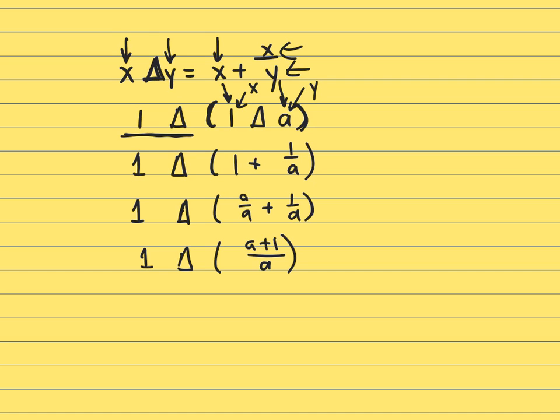Now let's do it again. That means this is your x and this is your y. And we know we want x plus x over y. So x is one plus one over my y value, which is a plus one over a.